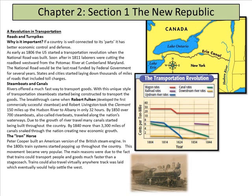Soon after, in 1811, laborers were cutting the roadbed westward from the Potomac River at Cumberland, Maryland. The national road would be the last road funded by the federal government for several years. States and cities started laying down thousands of miles of road that included toll charges. Rivers offered a much faster way to transport goods, so steamboats started being constructed. The breakthrough came when Robert Fulton developed the first commercially successful steamboat, and Robert Livingston took the Claremont 150 miles up the Hudson River to Albany in only 32 hours. By 1850, over 700 steamboats, called riverboats, traveled along the nation's waterways.